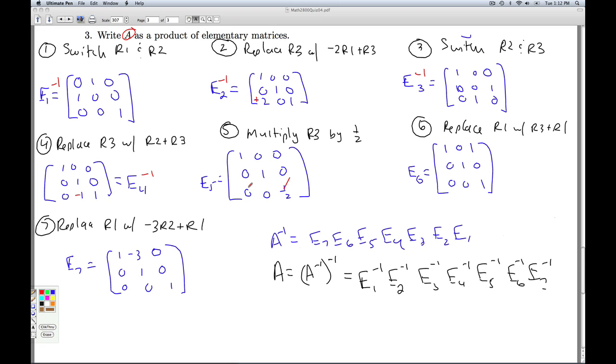I've got a stray mark here. How do I undo multiplying row 3 by a half? Multiply row 3 by 2. I've replaced row 1 with row 3 plus row 1. How do I undo that? Replace row 1 with negative row 3 plus row 1. And finally, I've got to undo replacing row 1 with negative 3 row 2 plus row 1. Make that positive 3.